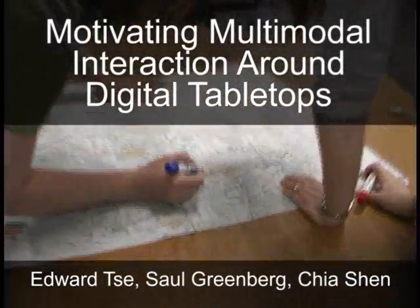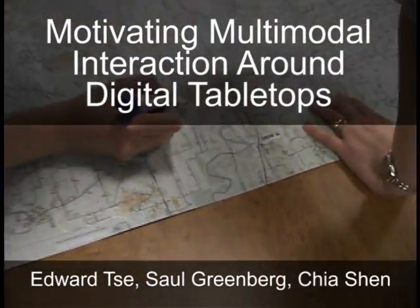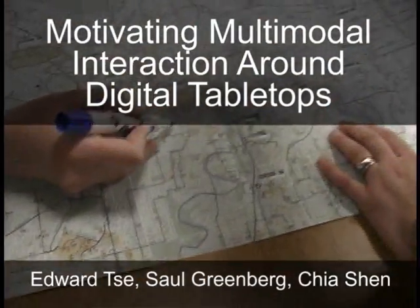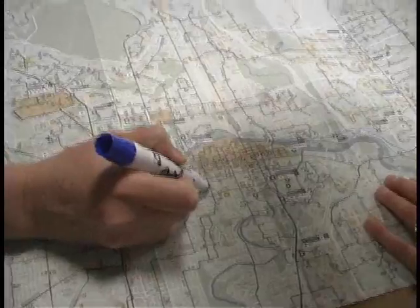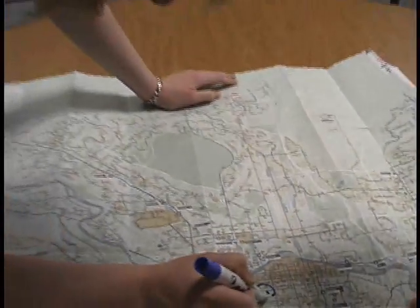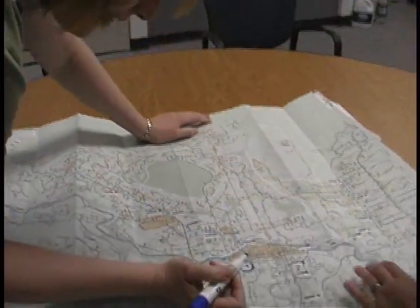People interact over everyday objects, such as paper maps, on large surfaces such as walls and tables, using a combination of speech and rich hand gestures.